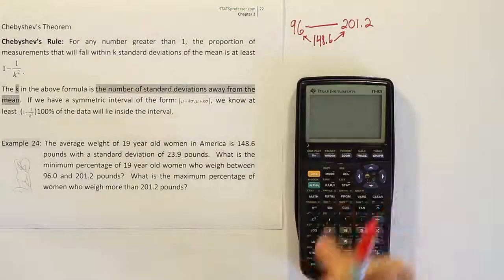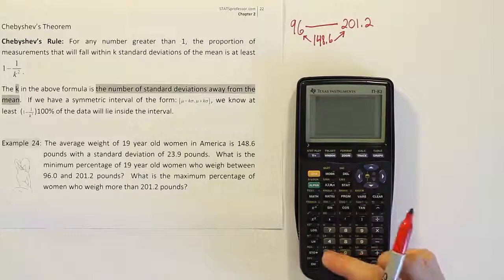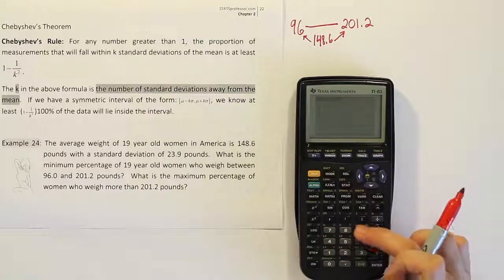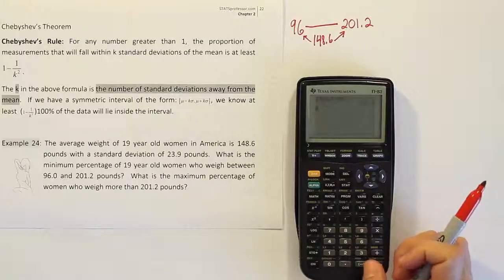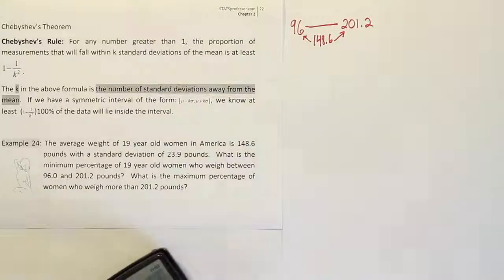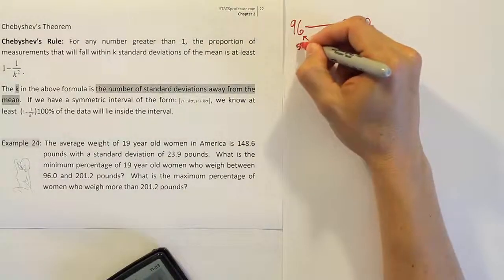What we're going to do is simply take our calculator, and we're going to take the 148.6 and we're going to subtract off that 96 that they gave us. And when we do that, we get 52.6. So that means the distance from here to here is 52.6.